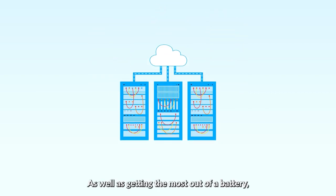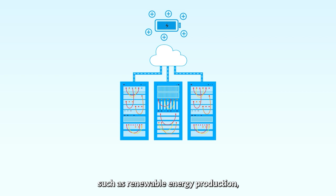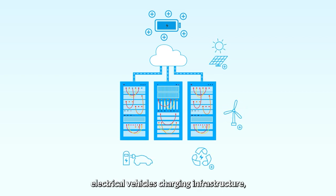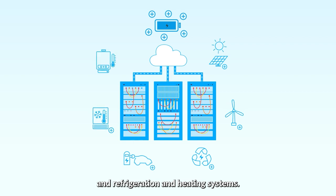As well as getting the most out of a battery, an energy management system can also optimize various systems within a company, such as renewable energy production, electric vehicle charging infrastructure, and refrigeration and heating systems.